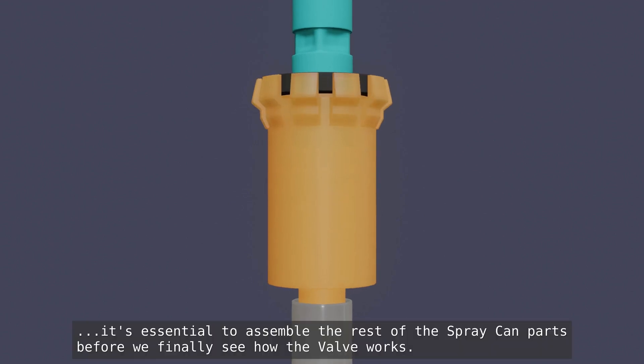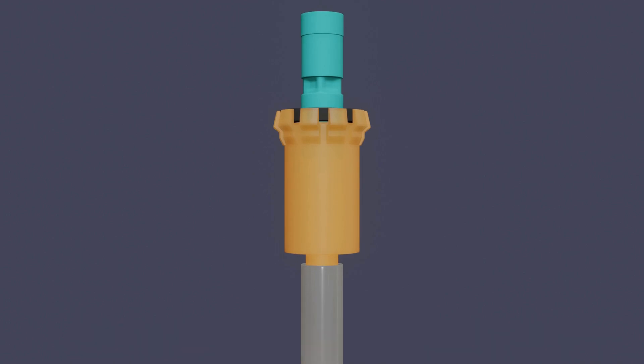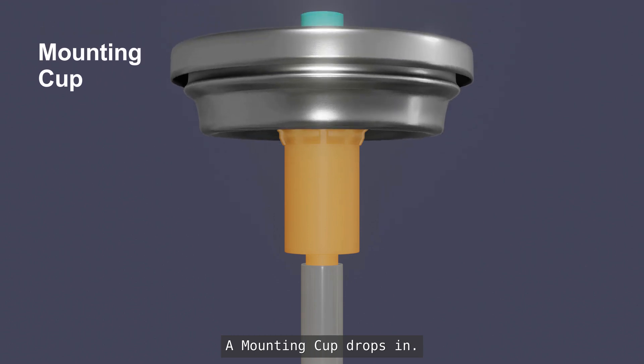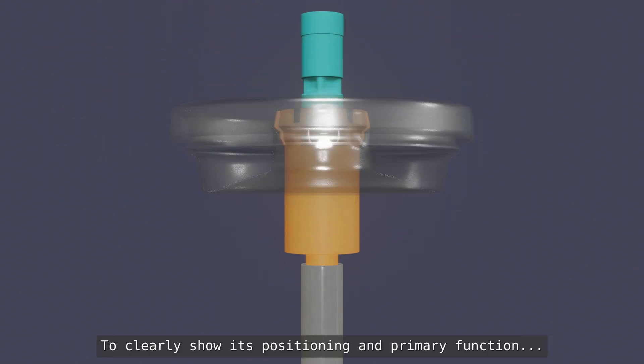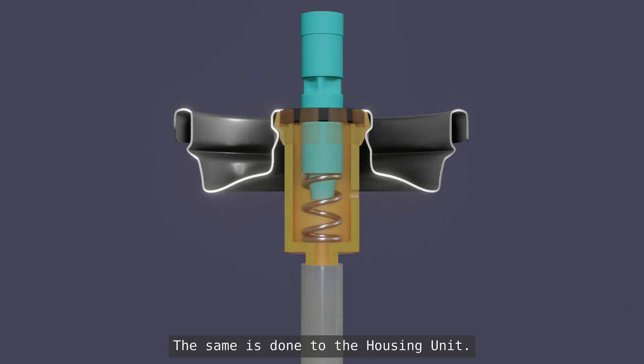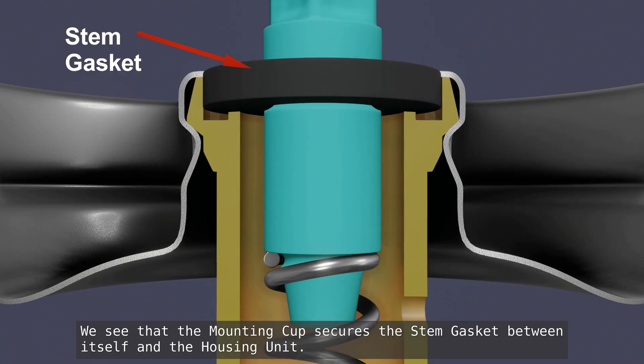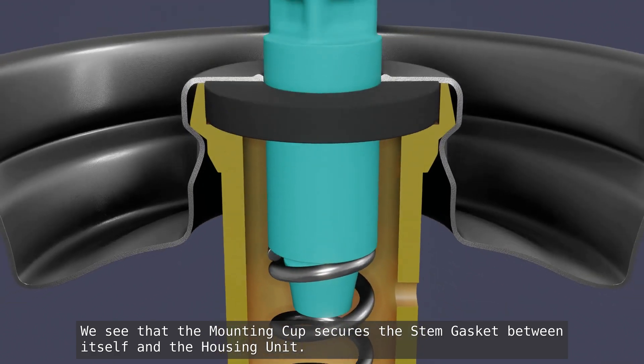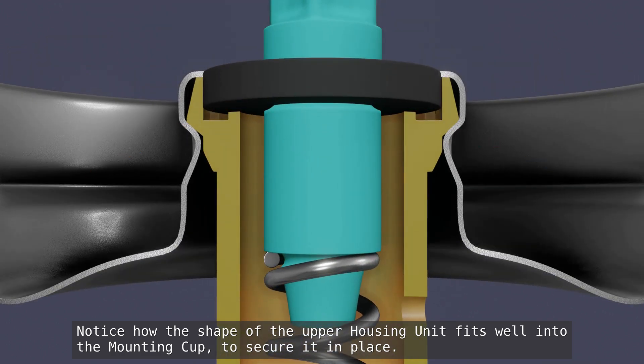At this point, it's essential to assemble the rest of the spray can parts before we finally see how the valve works. A mounting cap drops in. To clearly show its positioning and primary function, we cut it in half. The same is done to the housing unit. We see that the mounting cap secures the stem gasket between itself and the housing unit. Notice how the shape of the upper housing unit fits well into the mounting cap to secure it in place.